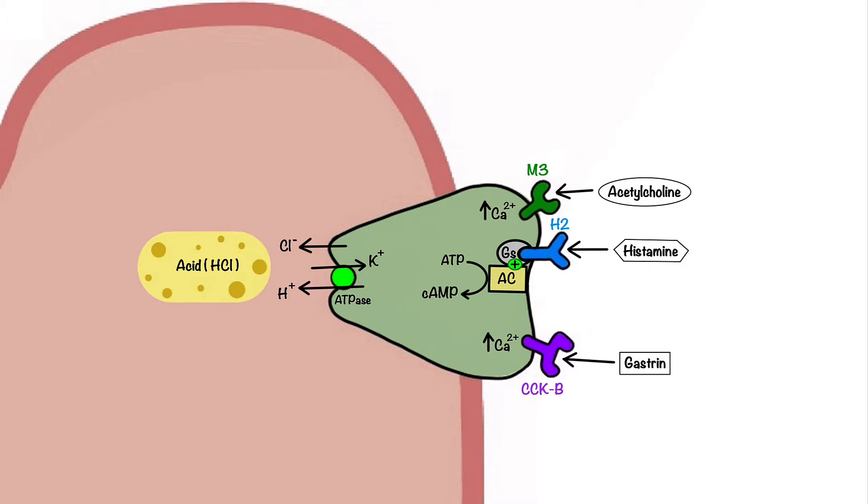Furthermore, parietal cells also express E-type prostaglandin receptors linked to an inhibitory Gi protein, which when stimulated by prostaglandins such as prostaglandin E1, inhibit the activation of adenylyl cyclase.